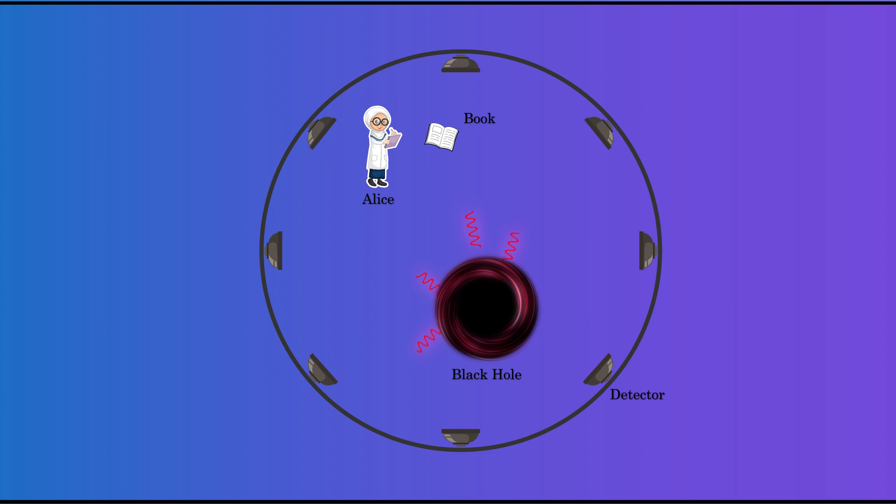Suppose Alice drops a diary into a black hole. The black hole emits Hawking radiation which gets collected by the detector outside. From this radiation alone, can Bob successfully recover the diary?